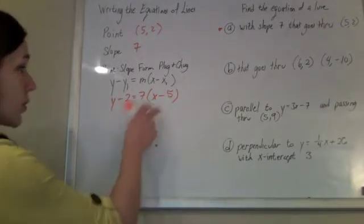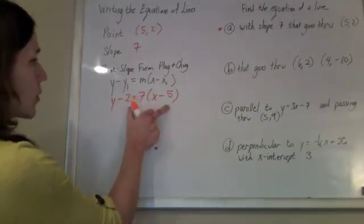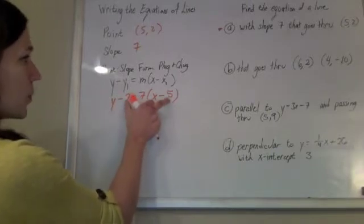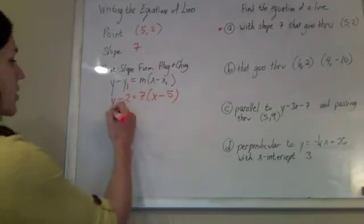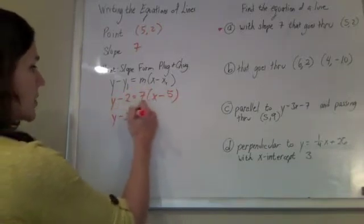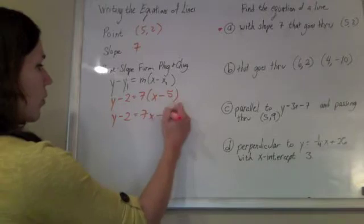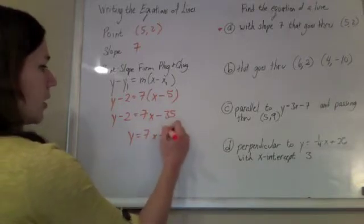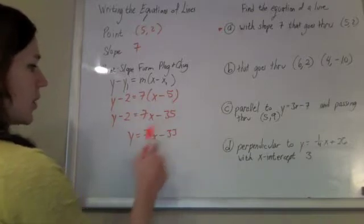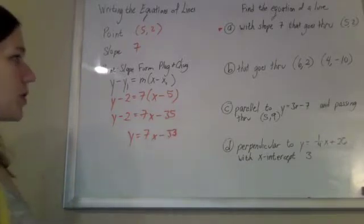A lot of times they don't let us leave it in point-slope form because this form is not unique. I could have put any points that the line went through in there and the equation would look different. So a lot of times you keep solving it for y so that you can get it into a nice slope-intercept form. 7x minus 33, and we're done.